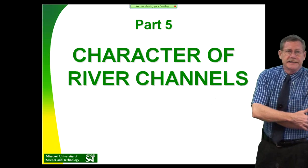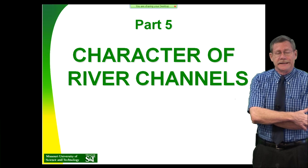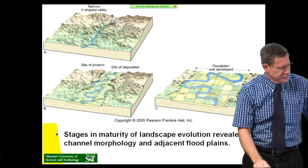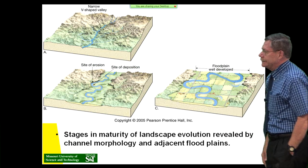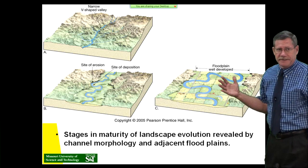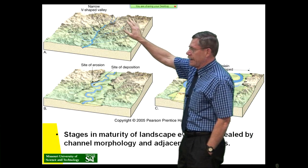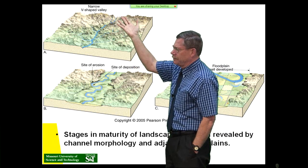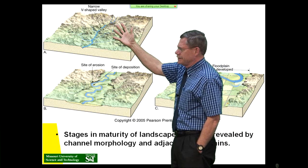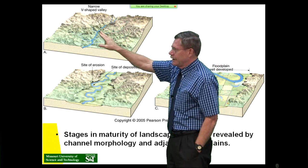Now we're going to be talking about the character of river channels - things about river channels that may not be obvious, based on professional practice and experience. You've probably seen these kinds of images before in physical geology and geomorphology texts. This is looking at the stages in maturity as a landscape evolves, starting with a narrow V-shaped valley when you have rapid uplift or rapid downcutting. Think of something like the Rocky Mountains - the source areas of these rivers will have steep V-sided canyons.